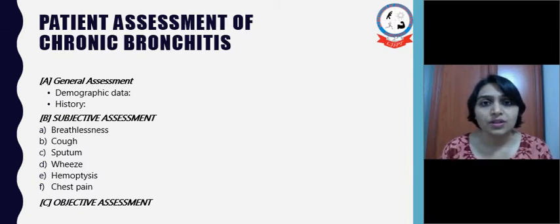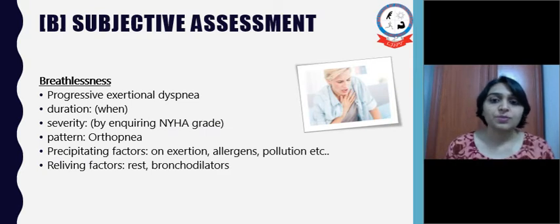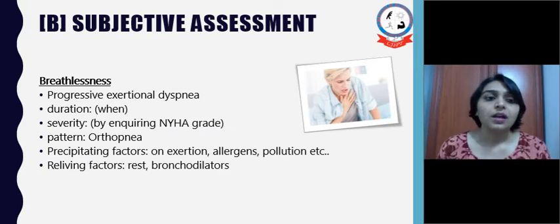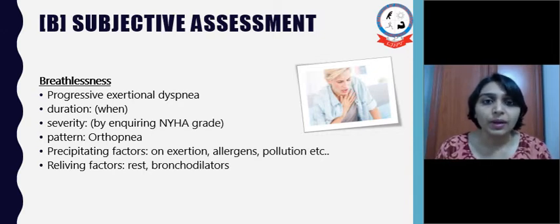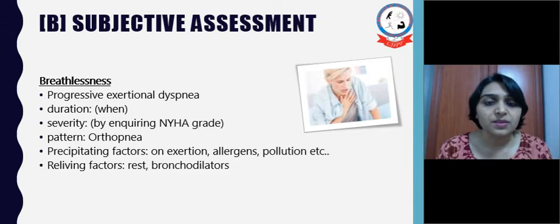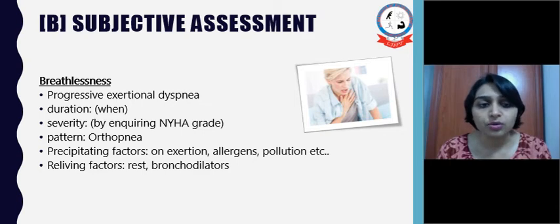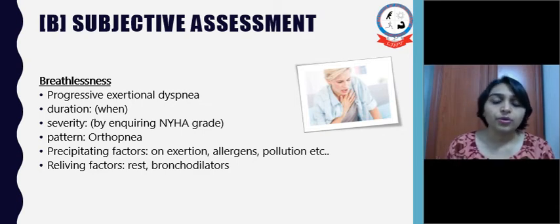In the subjective assessment, for breathlessness: the patient usually has progressive exertional dyspnea. We need to ask about duration, severity, and pattern. The patient may also complain of orthopnea — feeling dyspnea when lying down. We need to ask about precipitating and relieving factors. The precipitating factor is usually exertion due to allergens and pollution; the relieving factor is usually rest and use of bronchodilators.